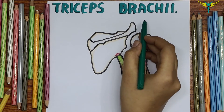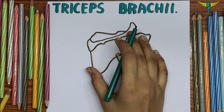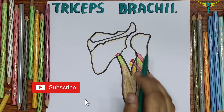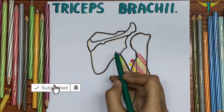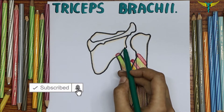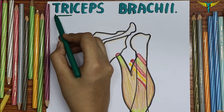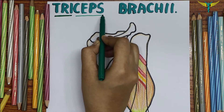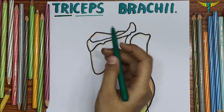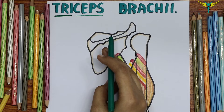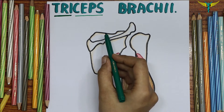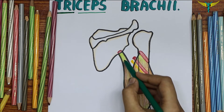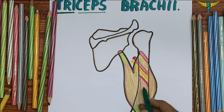The triceps brachii is a large muscle that forms most of the area on the back of the arm. As the name indicates, 'tri' meaning three and 'ceps' meaning heads, it has three sources of origin: a long head, a lateral head, and a medial head.